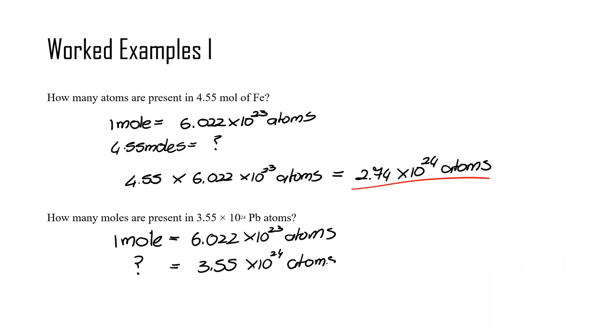How many moles equals to 3.55 times 10 to the 24 atoms? And here we will then work it as 3.55 times 10 to the 24 divided by 6.022 times 10 to the 23, which is equivalent to 5.90 moles. And again, it would be 5.90 moles of lead atoms.